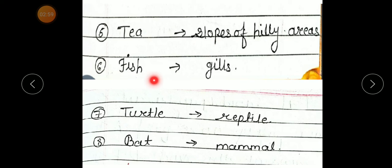Number 6, fish, gills. Number 7, turtle, reptile. Number 8, bat, mammals. Complete it. These are match the following columns. Complete.